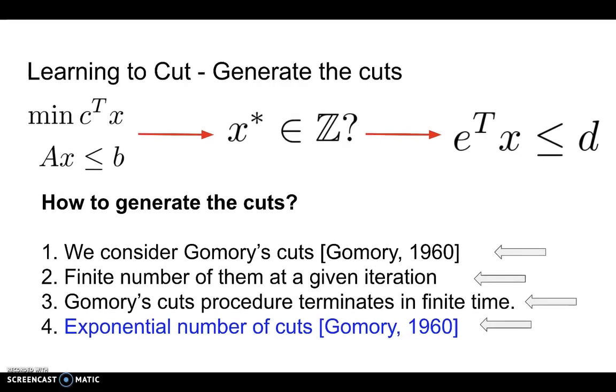However, a potential disadvantage is that under certain conditions, it can take as many as exponential number of cuts to terminate the procedure. So the question is, can we learn which cuts to add so as to minimize the number of cuts it takes to terminate the cutting plane procedure?